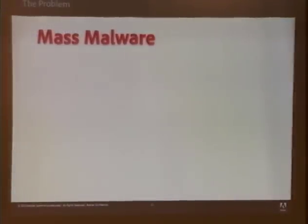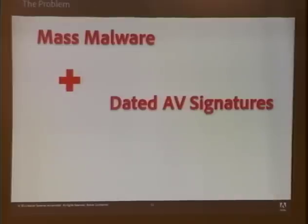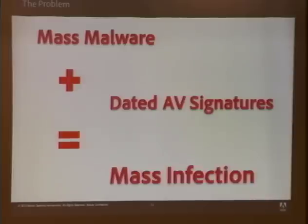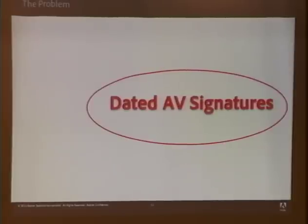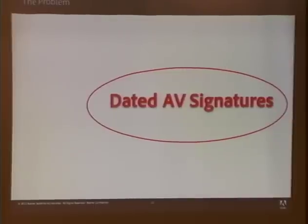The equation I'd like to offer as a model for how mass malware spreads is: mass malware combined with dated AV signatures leads to mass infections. The topic we'll analyze in more depth is the second piece of that equation — what are dated AV signatures, and why do signatures become outdated?